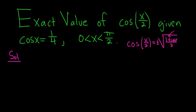So the first thing we have to do in this problem is to determine whether we use the plus or the minus. In order to do that we have to figure out where the angle x over 2 is. So we'll start by writing down our condition on x. We know x is between 0 and pi over 2.